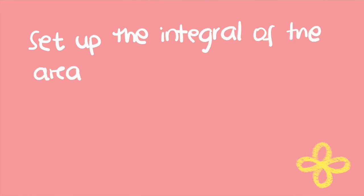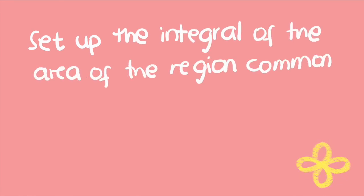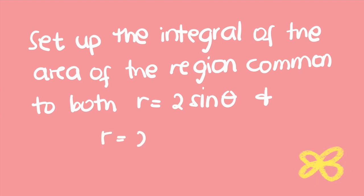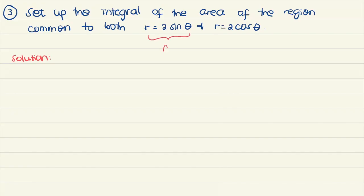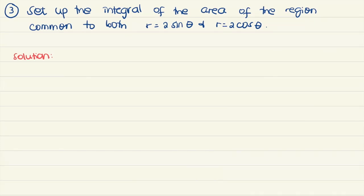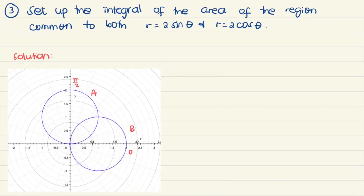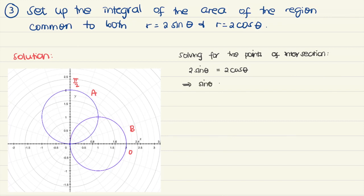Next, we are asked to set up the integral for the area of the region common to both curves r equals 2 sine theta and r equals 2 cosine theta. Let's call this curve A and this one curve B. First, let's find the points of intersection. Equating 2 sine theta to 2 cosine theta, we get sine theta equals cosine theta.